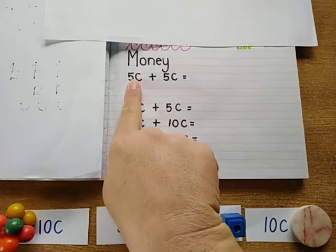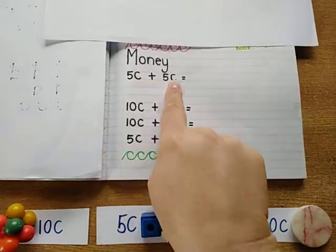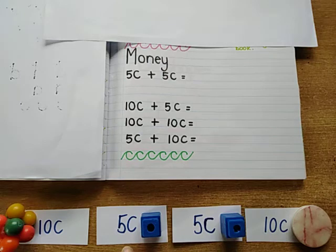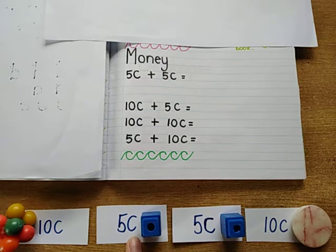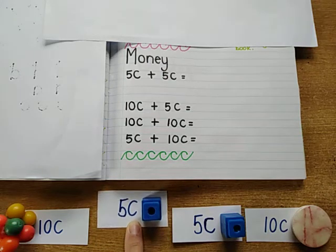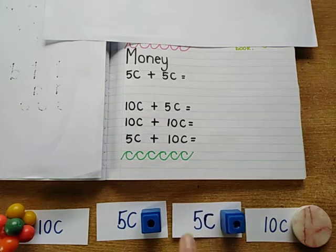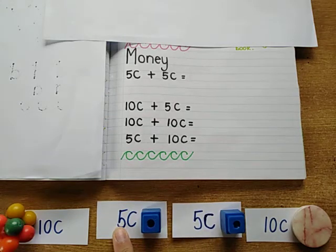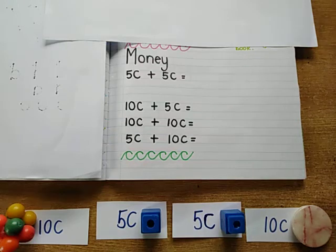So you'll see our first sum says 5 cent plus 5 cent. So it would be the same as working out what the answer would be if I bought one block and another block because they both cost 5 cent. And I will show you how to do that.